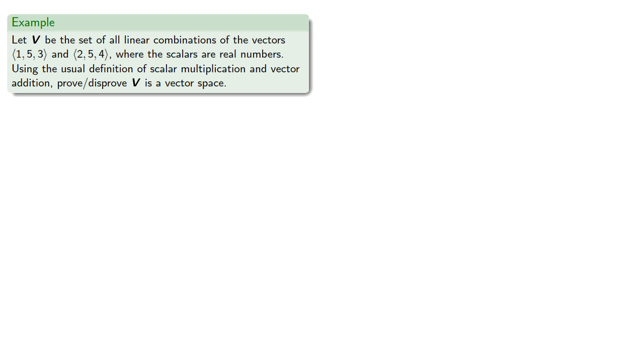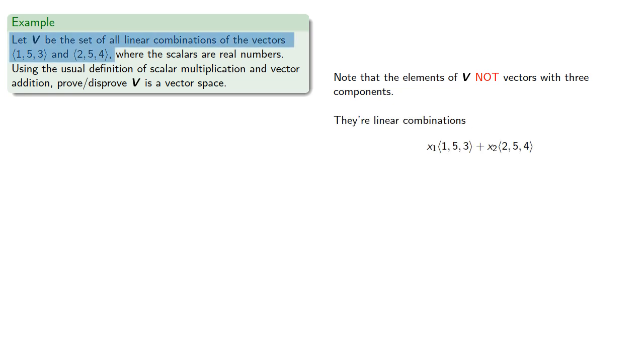Now, it's important to note that the elements of V are not vectors with three components. They are linear combinations: something times (1, 5, 3) plus something times (2, 5, 4). So we need to prove or disprove that these linear combinations satisfy the requirements for a vector space.